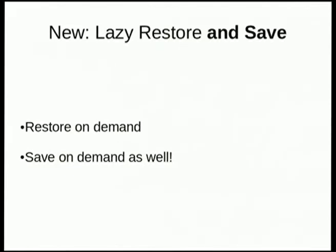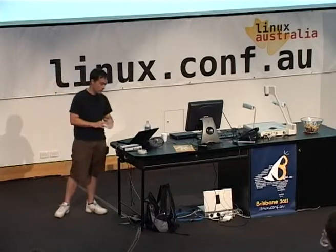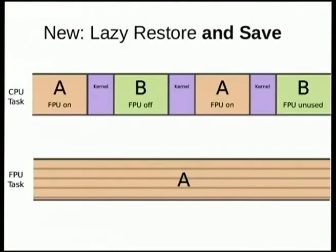So we were restoring on demand and we've kept that, but what we're going to do is save on demand as well, rather than saving at the end of the time slice. We're also going to try and reuse the floating point state if possible. A is running with the floating point unit off, the floating point unit is associated with task A. When the kernel starts task B and it knows B is not going to use the floating point unit, it comes with the floating point unit off and doesn't change the FPU task. So when A starts running again, the floating point state is already there and it can just start with the floating point unit on — not needing to restore those 256 bytes.